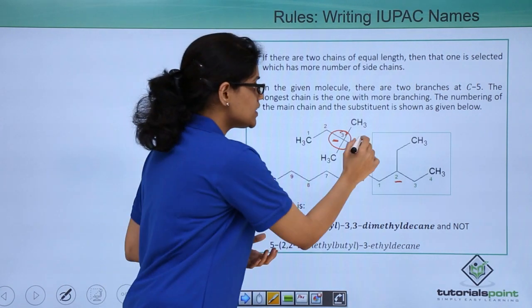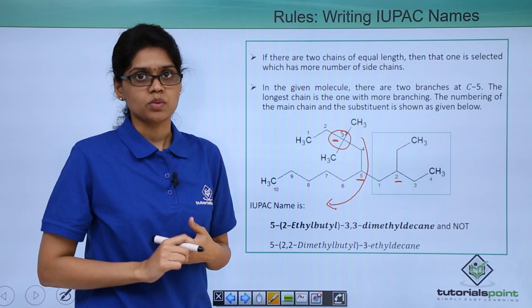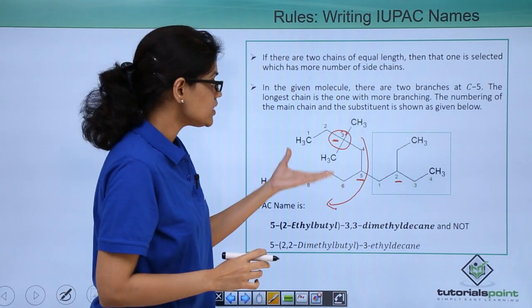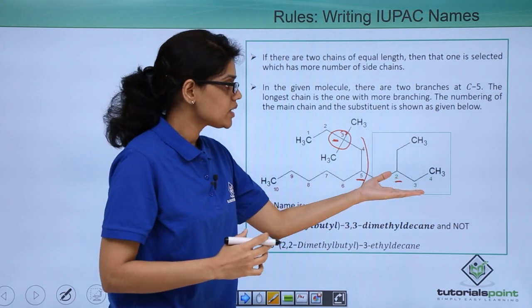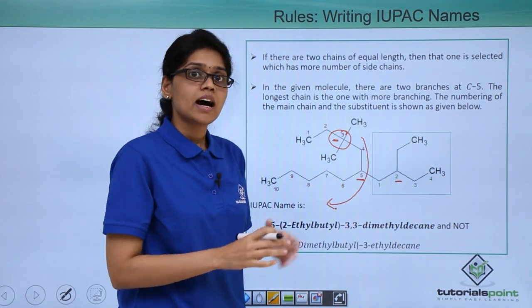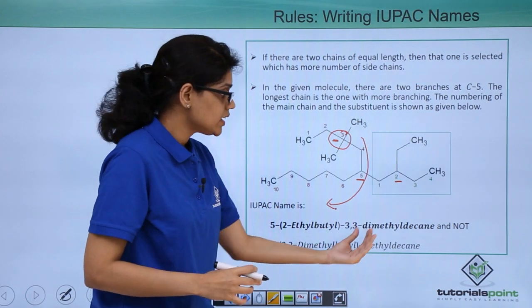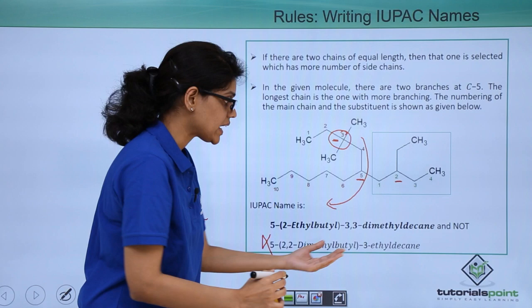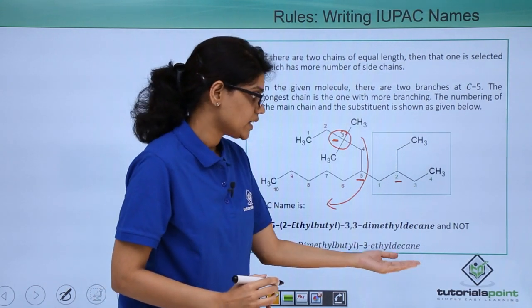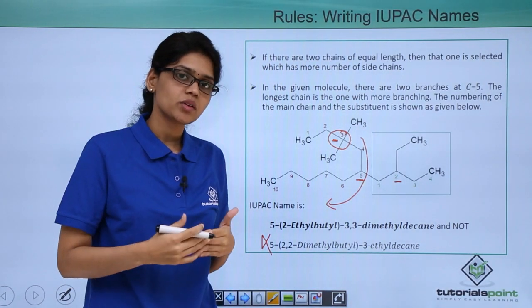For the same reason this will be your major parent chain and this will simply act as your substituent. So you can see that here the more branched carbon will be considered for a parent chain and this will consequently become your substituent. And the name of this particular compound would be 5-(2-ethylbutyl)-3,3-dimethyldecane and not 5-(2,2-dimethylbutyl)-3-ethyldecane which will be the name if you consider this as your parent chain.